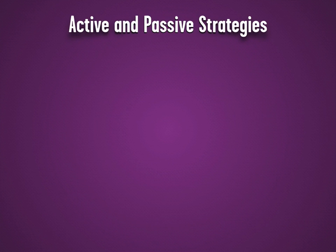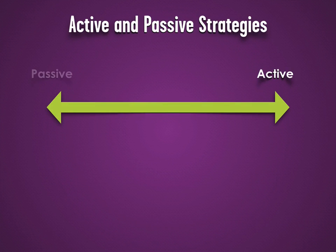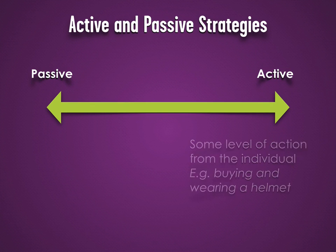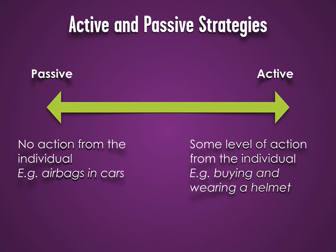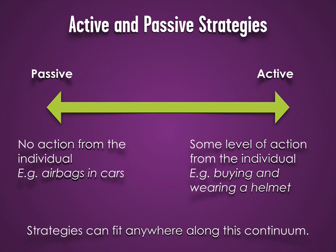In all these cases, we can talk about active versus passive strategies. Active strategies rely on individuals taking some level of action — for example, buying and wearing a helmet. Passive strategies require no action from the individual, as in airbags in cars. Injury prevention strategies can fit anywhere along this continuum.